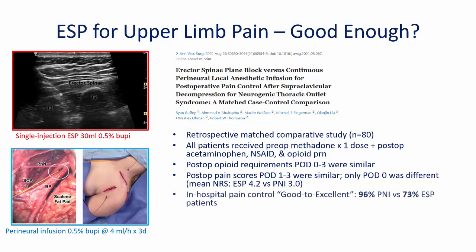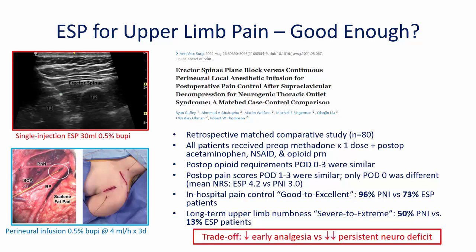It's fair to say that analgesia from the single-injection ESP block was probably not as good, based on patient ratings of in-hospital pain control. However, what was most striking was that the incidence and severity of prolonged sensory loss in the upper limb was dramatically reduced in the ESP group, leading to a change in practice away from perineural infusions to ESP blocks. In my opinion, this is yet another interesting example of the benefit an indirect block like the ESP can offer — analgesia that's not perfect, but still good enough, with any shortfall compensated by less local anesthetic reaching the target nerve, resulting in less neurotoxicity and persistent deficits.